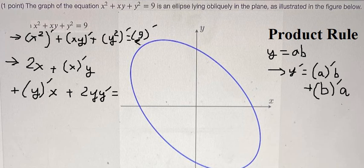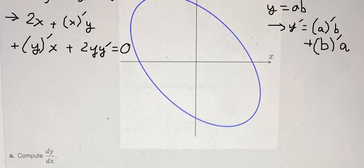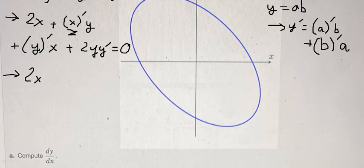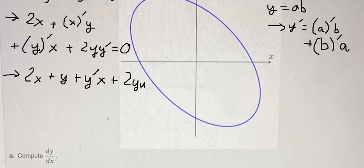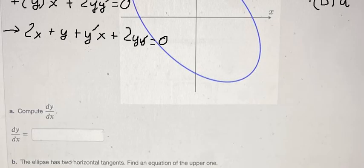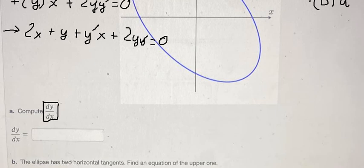This term is a constant, so we get zero. We simplify: the first derivative of x gives us 1. Then we have the first derivative of y multiplied by x, plus 2y times the first derivative of y. Now we see that the first derivative of y is dy/dx.